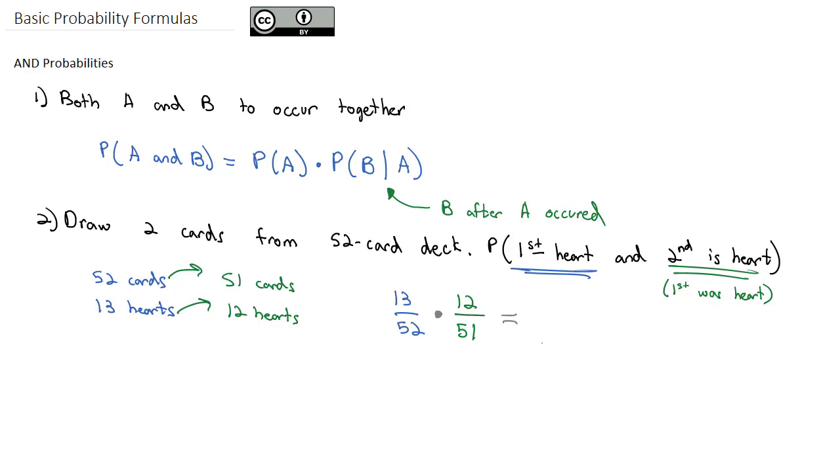So now I'm multiplying 13 over 52 times 12 over 51. That's going to give me a probability of 0.0588 that I draw two hearts from a standard 52-card deck.